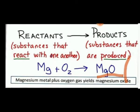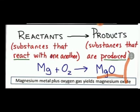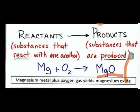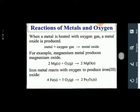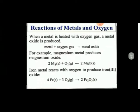Whenever products are formed, it means substances have reacted with one another. Whenever there are no reactants, there will be no product. For example, magnesium and oxygen are the reactants which produce magnesium oxide. When a metal is heated with oxygen gas, a metal oxide is produced. Metal plus oxygen gas are the reactants, and the product is the metal oxide. Iron metal also reacts with oxygen to produce iron oxide.